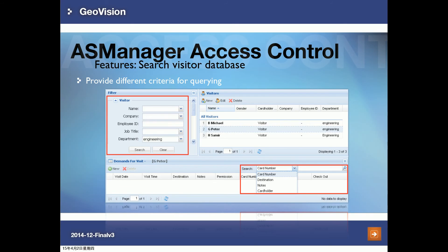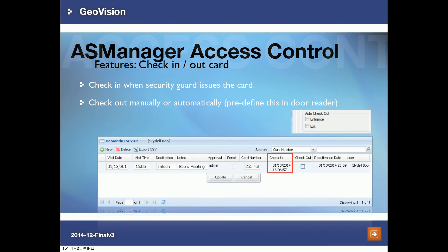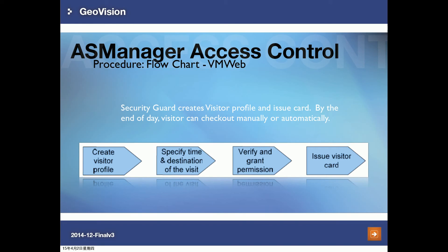You can view pending visit requests — for example, when a visitor self-registers, you can choose which card to assign them and whether to grant permission. Once permission is granted and a card is assigned, the visitor is checked in. Checkout can be done manually by a security guard clicking the checkout button, or automatically when the visitor swipes the card at one of the readers.